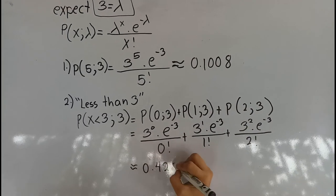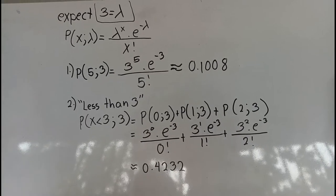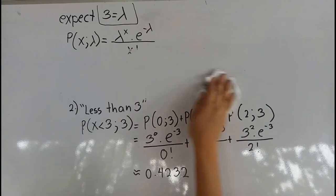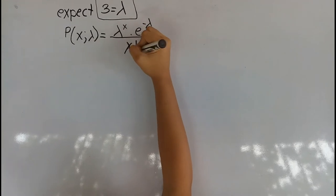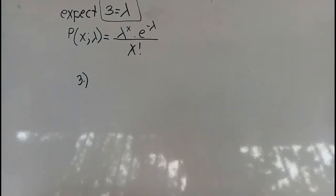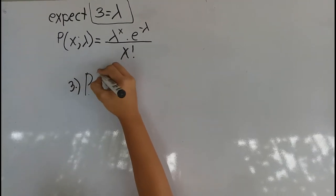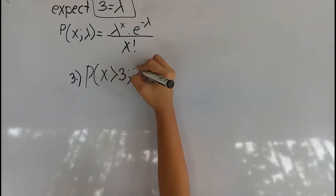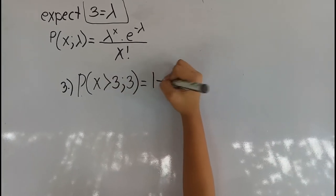This is equal to 0.4232. For Number 3, the probability of x greater than or equal to 3, given lambda equals 3, is equal to 1 minus the quantity of P(0|3) plus P(1|3) plus P(2|3), which equals 1 minus 3 raised to 0 times e raised to negative 3 all over 0 factorial, plus 3 raised to 1 times e raised to negative 3 all over 1 factorial, plus 3 raised to 2 times e raised to negative 3 all over 2 factorial, which is approximately equal to 0.5768.